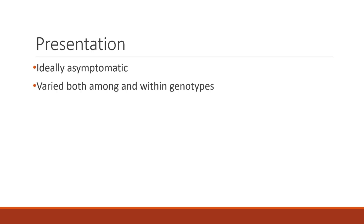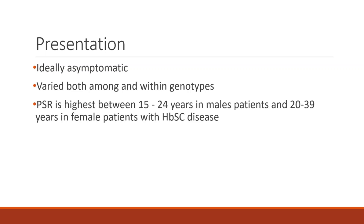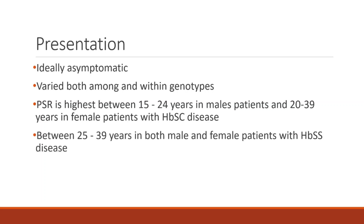A patient presenting to the ophthalmology office would ideally be asymptomatic. However, when symptoms do occur, they are varied both among and within genotypes. The finding most consistent with genotype is that hemoglobin SC genotypes tend to present earlier with proliferative sickle cell retinopathy, highest between 15 to 24 years in male patients and 20 to 39 years in female patients. On the other hand, hemoglobin SS disease presents later, usually between 25 to 39 years in both male and female patients.